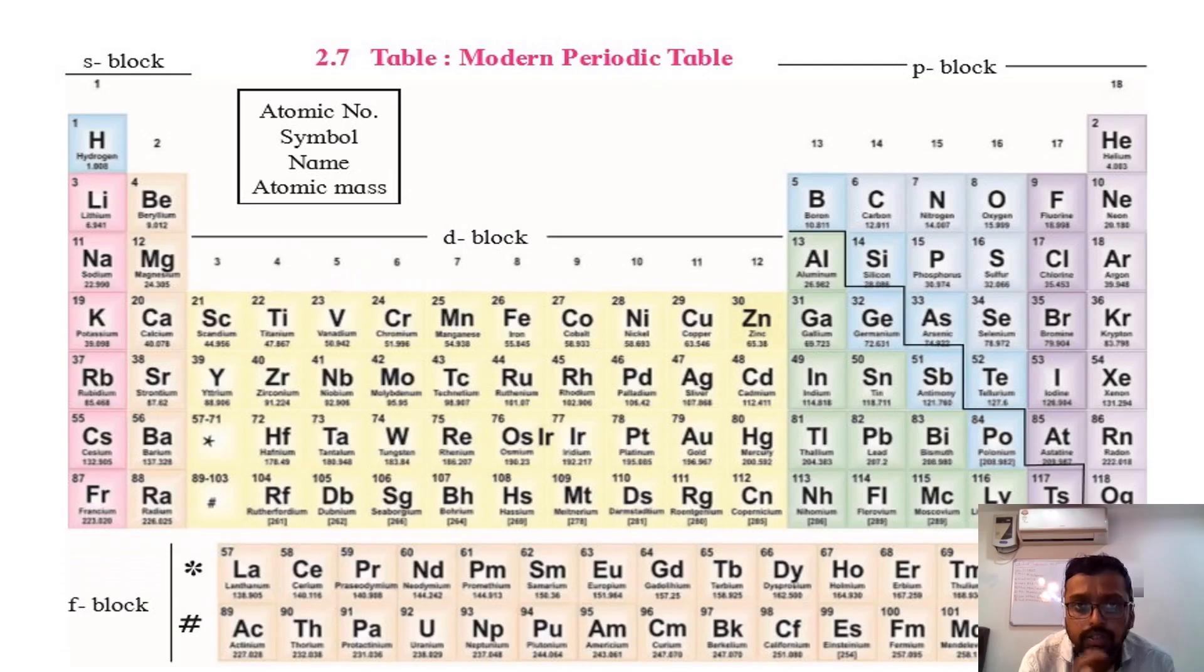So this is our periodic table. In this comes s-block, s-block part, this part here. Let me select a highlighter. I'll use pen directly. So this part here, this part.